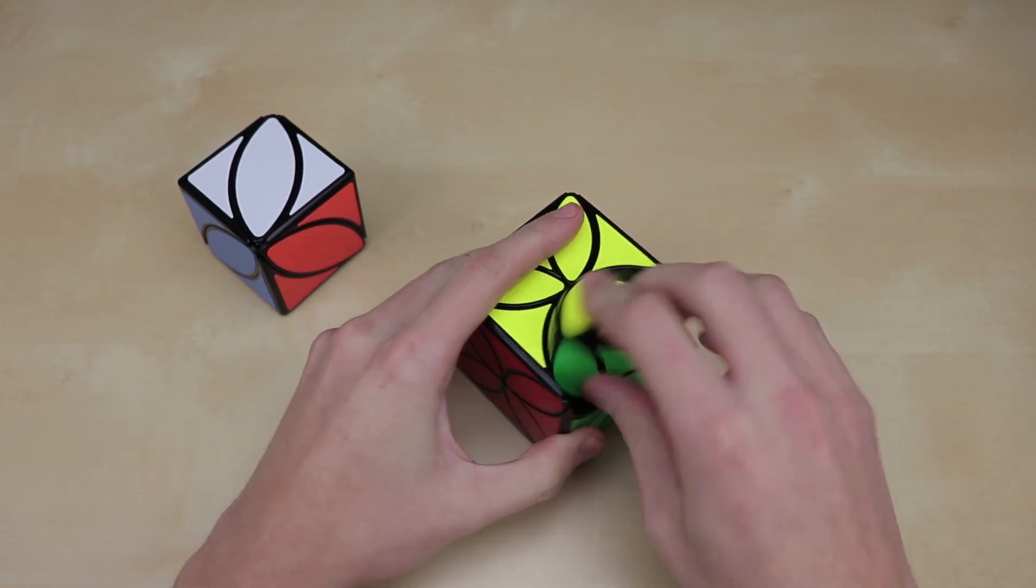Now, upon first glance, you might be kind of confused about how exactly this puzzle turns. You might try and turn it here, or here, or here, and not have it do anything. You might try and turn the corners. But nothing really seems to work. But you may notice that you can actually turn these centerpieces freely just like this.